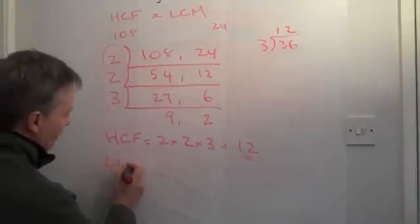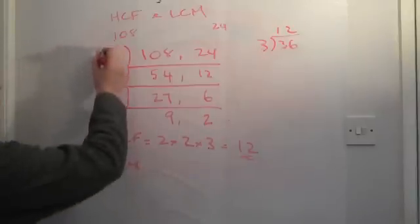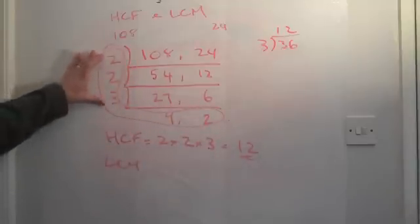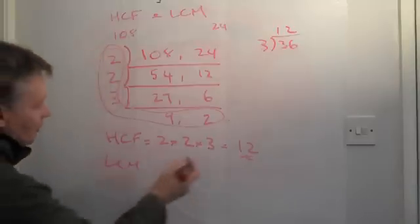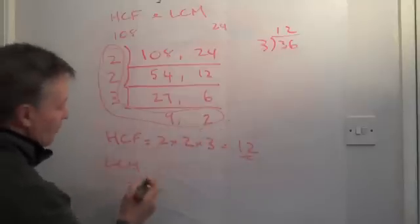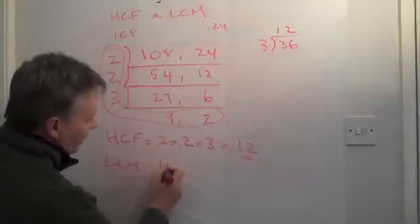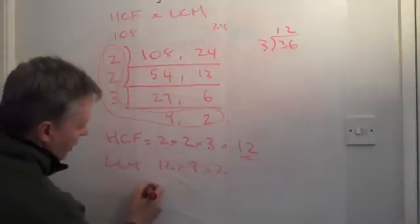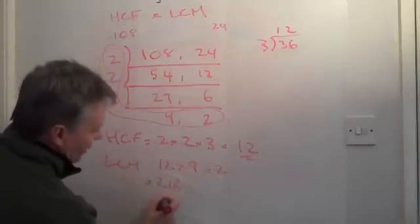And the LCM is basically all those numbers multiplied together. Now, we've already multiplied those. So, I'm now going to multiply that answer by 9 and by 2. So, it's going to be 12 times 9 times 2, which is 216.